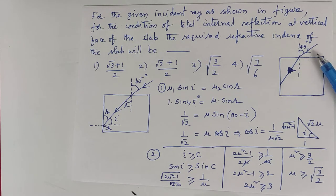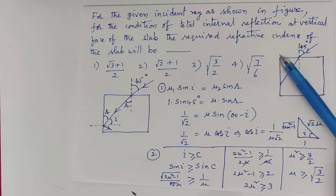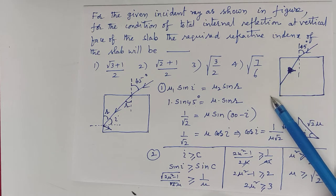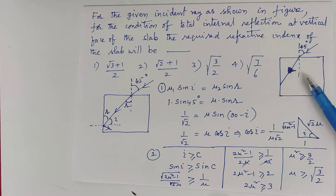A light ray is incident at an angle of 45 degrees. After refraction, it is incident on the vertical surface. If you want to have total internal reflection at the vertical surface, what should be the minimum value of refractive index of the glass slab?